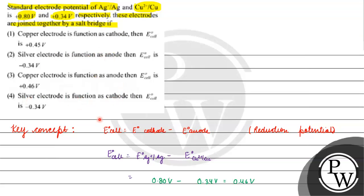Option three says copper as anode - this is right. But E°cell will not be 0.34V, it will be plus 0.46V.